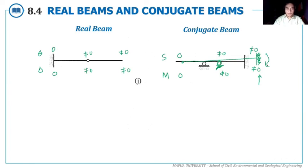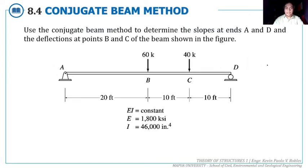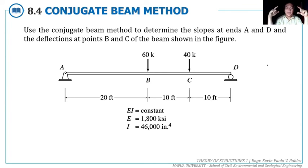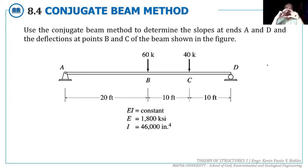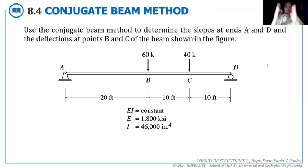That is how we identify the conjugate beam for any given real beam. I don't want you to memorize the corresponding conjugate beams — I want you to understand how we arrive at them. The slope and deflection of the real beam correspond to the shear and moment of the conjugate beam. Use that correspondence at each joint to determine the conjugate beam configuration. I hope you've learned the concepts of the conjugate beam method.